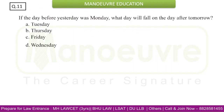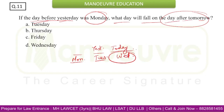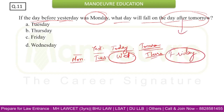If the day before yesterday was Monday, what day will fall on the day after tomorrow? If day before yesterday = Monday, then yesterday = Tuesday, today = Wednesday. Tomorrow = Thursday, and day after tomorrow = Friday. The answer is Option C: Friday.